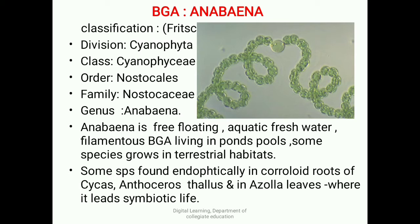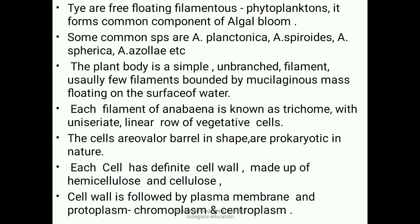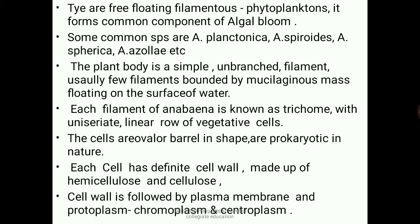Anabaena is a free-floating filamentous phytoplankton and forms a common component of algal blooms. Common species include Anabaena planktonica, Anabaena sphaerica, and Anabaena azollae. The plant body of Anabaena is a simple unbranched filament, with usually a few filaments bounded by a mucilaginous mass floating on the surface of water. Each filament is known as a trichome, consisting of a uniseriate linear row of vegetative cells placed one above the other.